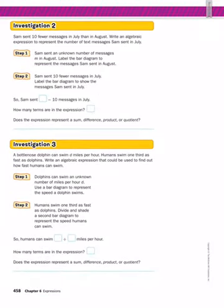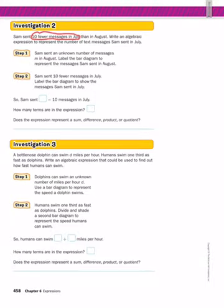Investigation 2: Sam sent 10 fewer messages in July than in August. Write an algebraic expression to represent the number of text messages Sam sent in July. Why can't we solve that? What don't we know? We don't know how many messages Sam sent in August.